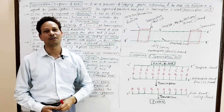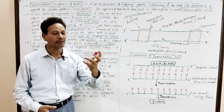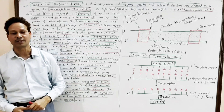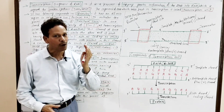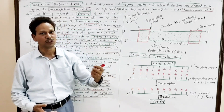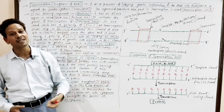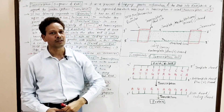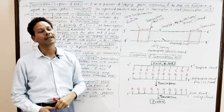Dear students, transcription is a process of copying genetic information of the DNA into RNA, which is required for the synthesis of the protein chain, that is translation. This entire mechanism of RNA formation, or transcription, occurs on a particular segment of DNA.